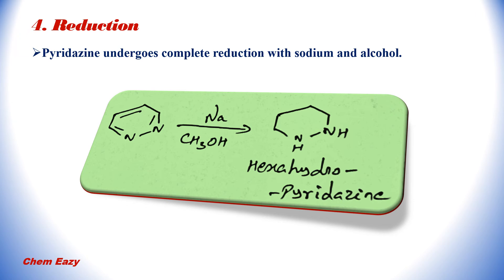When pyridazine is reduced, it undergoes complete reduction with sodium and alcohol. Pyridazine with sodium in alcohol, that is methanol, undergoes complete reduction and produces hexahydropyridazine.